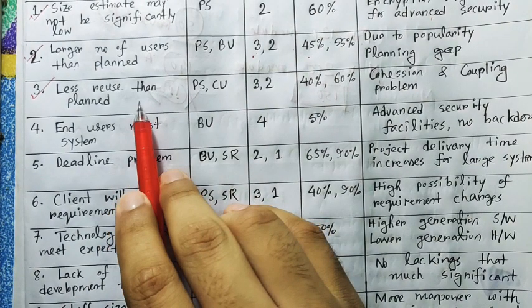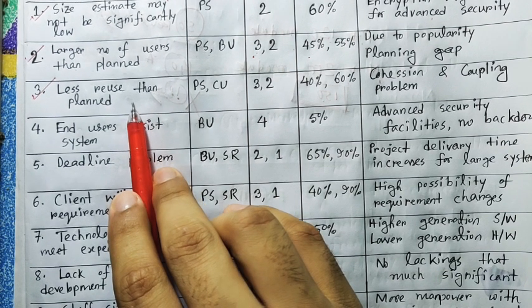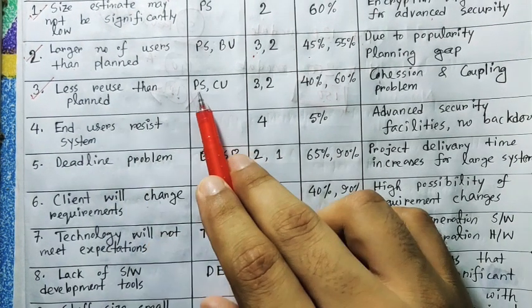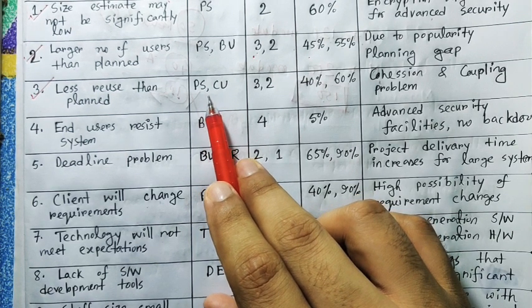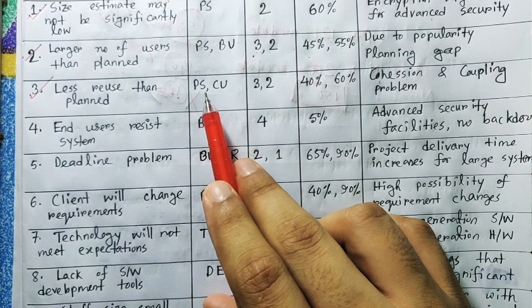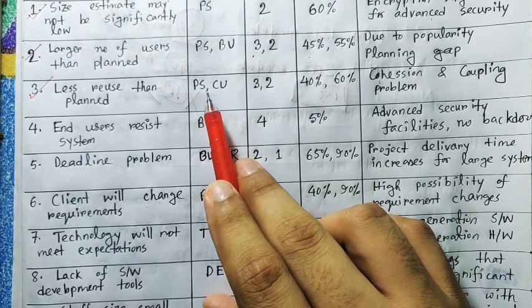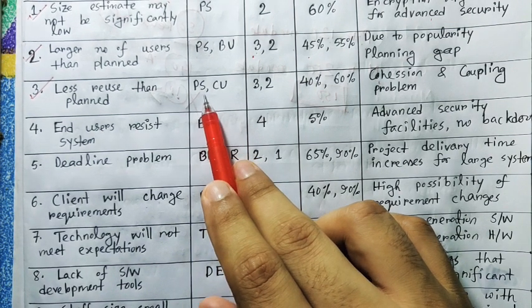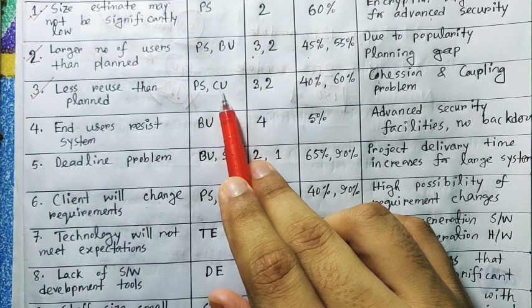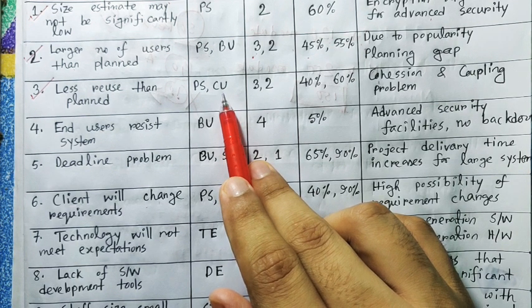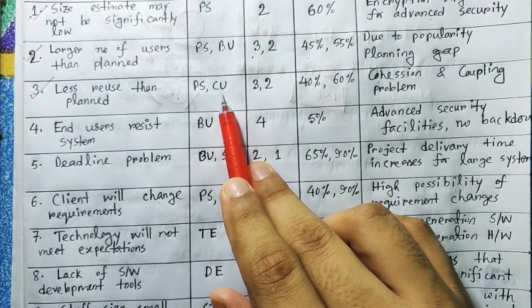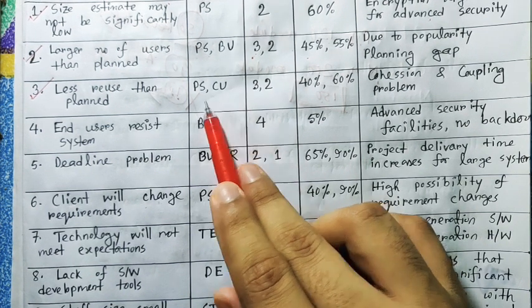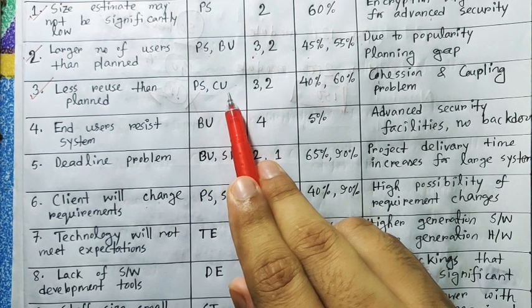So the less reuse than planned is the point. Now, the less reuse than planned is which category? The first category is the product size. Why product size? This is the module related. The module is the key. That means you can develop and develop, and it will be sizeable — this is the product size category. The cost unit related is a special category. Why cost unit related? If you are going to have 5% of the reuse code, but if you are going to use more, you will be able to incur extra cost.